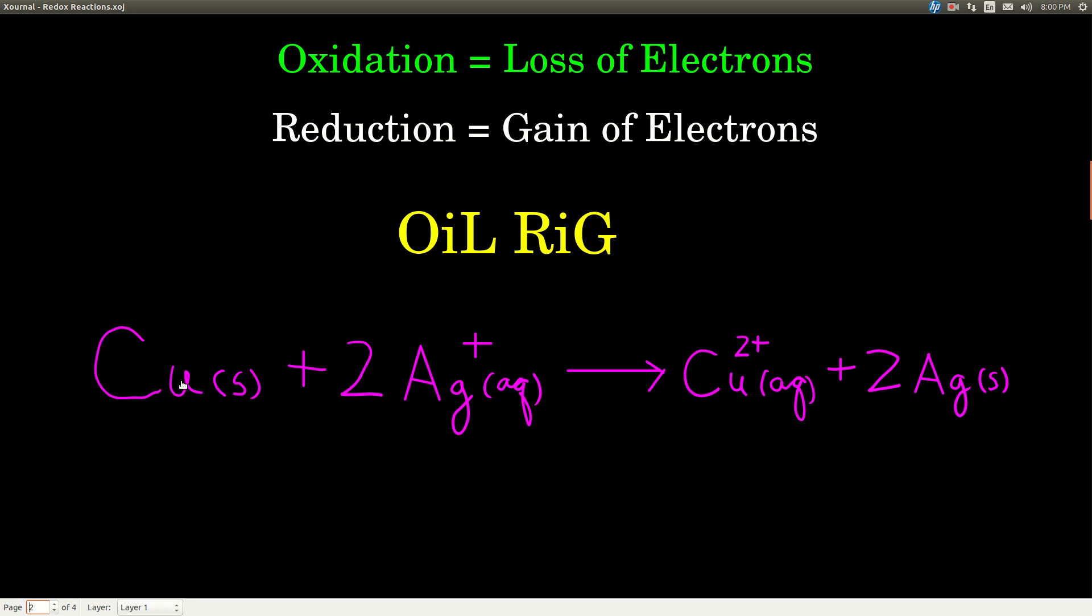So you see copper went from a charge of 0 to plus 2. The only way that can happen is if copper is losing two electrons. So that means, because oxidation is loss, we would say that copper is being oxidized. And silver has a positive 1 charge here and a 0 charge over here. The only way that can happen is if each of the silver atoms gains an electron. And because reduction is gain of electrons, we say that silver is being reduced.